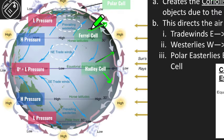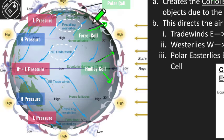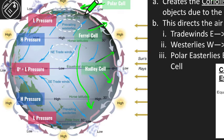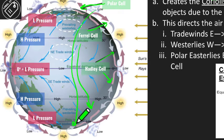We also have the Ferrel cell as the next one. We have sinking cool dense air, but as air travels across the earth it warms up a little bit, then we get rising low-pressure warmer air to form a Ferrel cell, both in the northern and southern hemispheres. The last type is the polar cell — the higher-latitude cell where warmer air rises up and the cooler, more dense, high-pressure air sinks, forming this third cell at the poles.